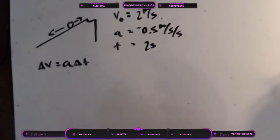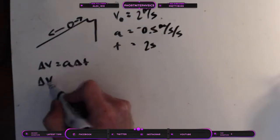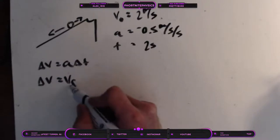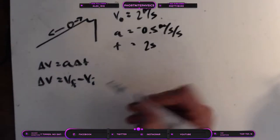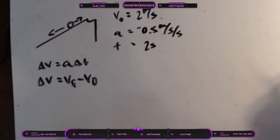So delta V, just like anything, means a change in velocity. That's what that delta means. And another way to write delta V is our final velocity minus our initial velocity, or V₀.